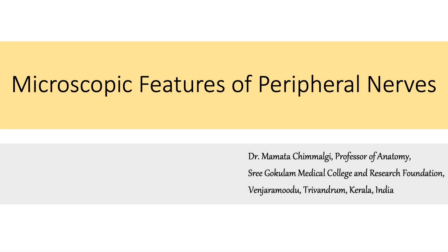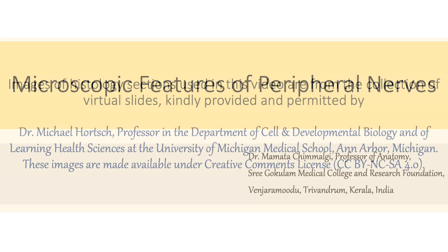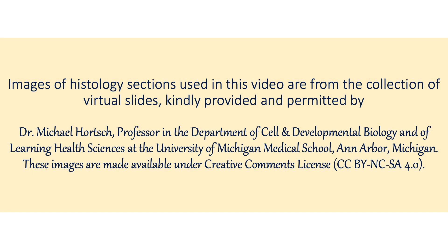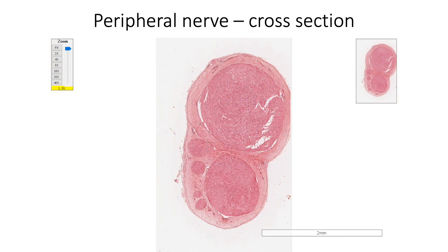Let us now consider the microscopic features of peripheral nerves. I am grateful to Professor Michael Horsch of University of Michigan Medical School for providing the images of histology sections used in this video. Peripheral nerves include all the spinal and cranial nerves and their branches. They consist of bundles of nerve fibers, both afferent and efferent, both myelinated and non-myelinated, surrounded by connective tissue coverings and supporting cells.